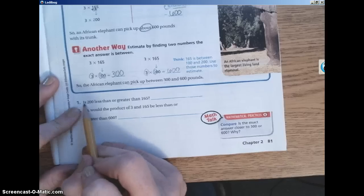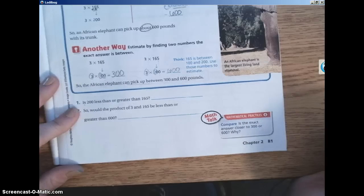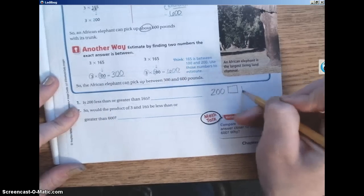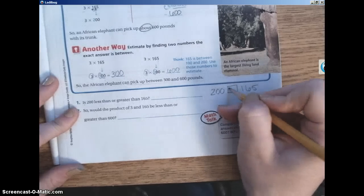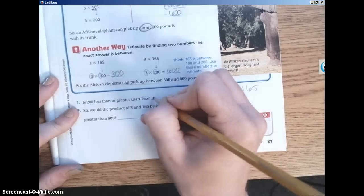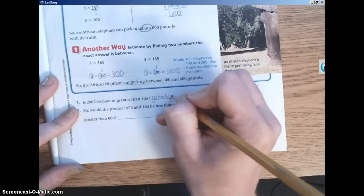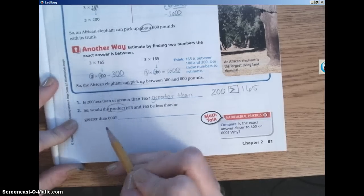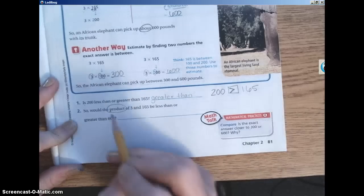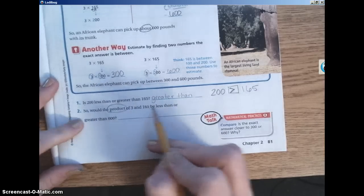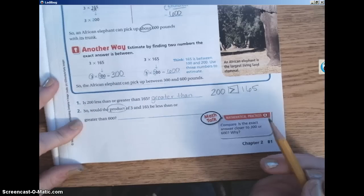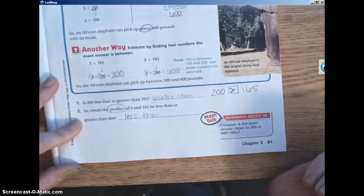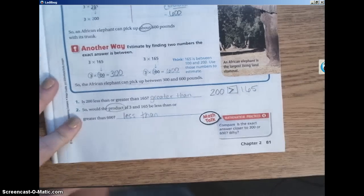Moving on down to number one. Is 200 less than or greater than 165? So you could write that out here if you are a more visual person like me. Is 200 less than or greater than 165? Well, I know that 200 is greater than 165. So I'm going to write that in word form right here on this line. So would the product, remember a product is when two factors are multiplied together, you get the product. Would the product of 3 and 165 be less than or greater than 600? So it would be less than 600.